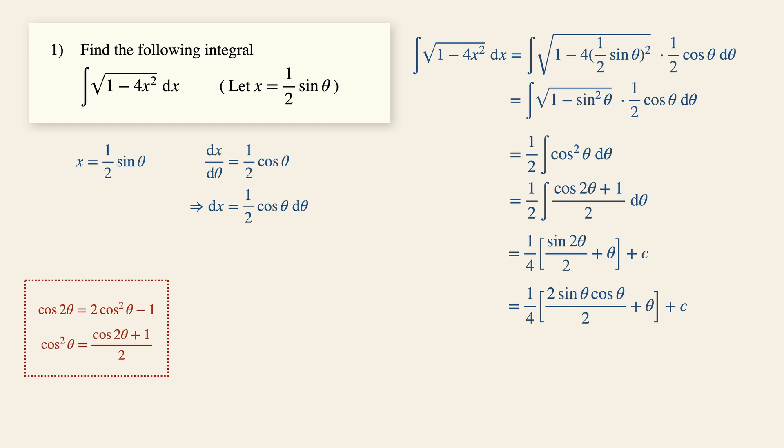Now to get x, all we need to do is to manipulate the original substitution expression. So sine theta is now 2x. But how about cosine theta? This is where we draw a right-angled triangle to help us. Now sine theta is opposite over the hypotenuse, which is 2x over 1. So using the Pythagorean theorem, the adjacent will then be square root 1 squared minus 2x squared, which is 4x squared. Thus cosine theta is square root 1 minus 4x squared over 1.